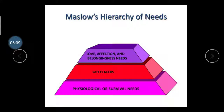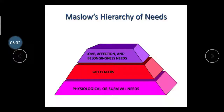The third part is the love, affection, and belongingness need. After the safety need, the third need develops — love, affection, and belongingness. If a person has satisfied their security and safety needs, they then seek to develop a sense of respect, affection, and belongingness within the society in which they live.